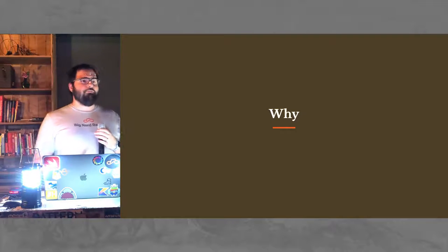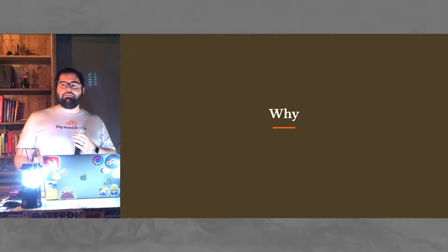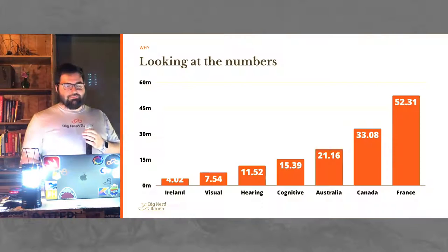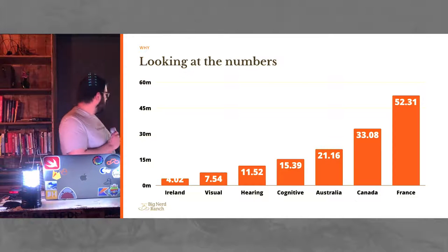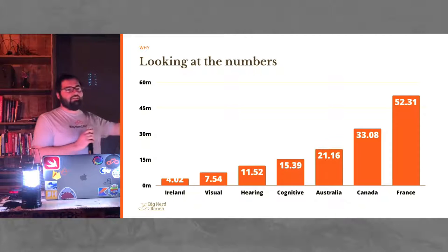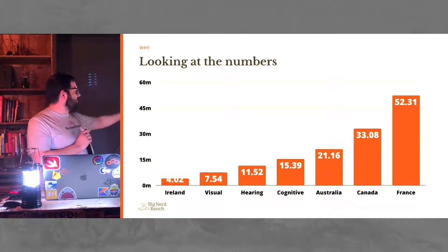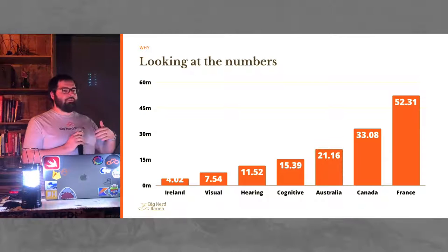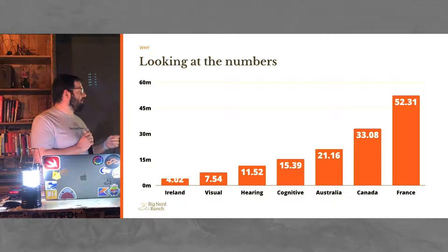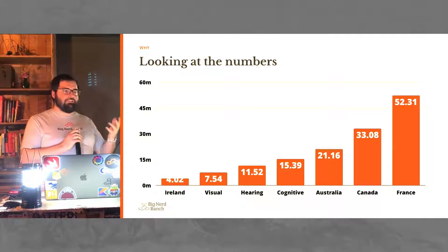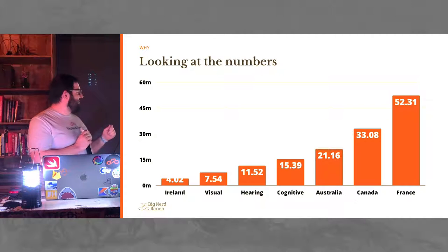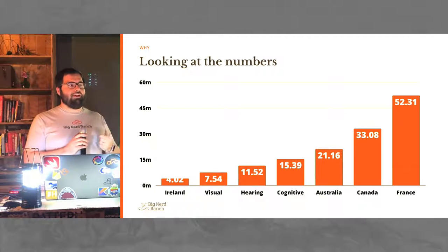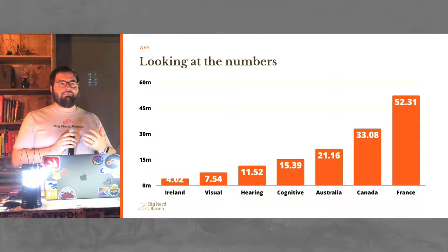So why should we care — from both an engineering perspective but also a business perspective — because it takes time, which means it takes a lot of money to develop for accessibility. To try and help, we'll look at some numbers. This is the visual, hearing, and cognitively disabled population in the U.S. versus just a few countries and their online users. Because typically, especially as we go into startups, we love to try and get into other countries. The good part about investing in accessibility early is it is one of the rare cases where it's actually not technical debt, but technical interest that you get.